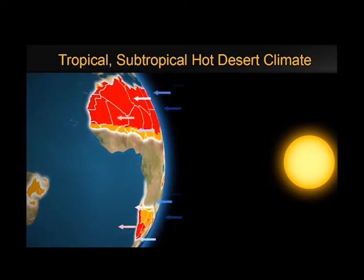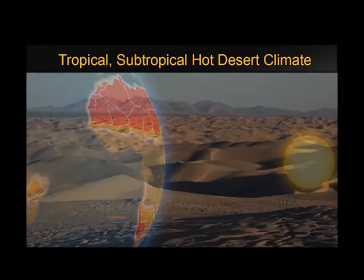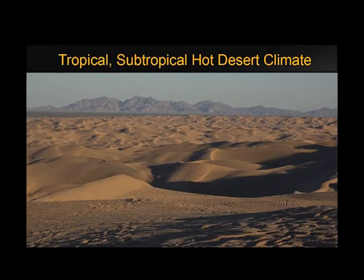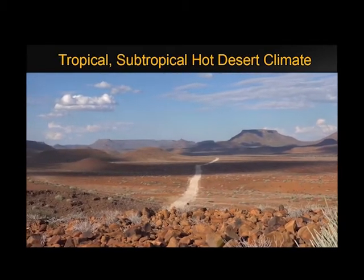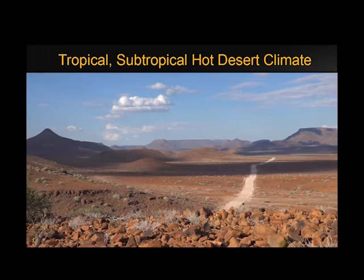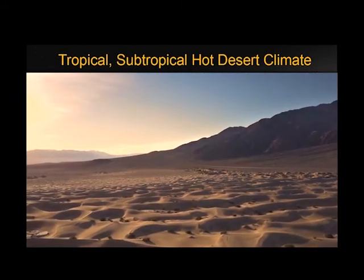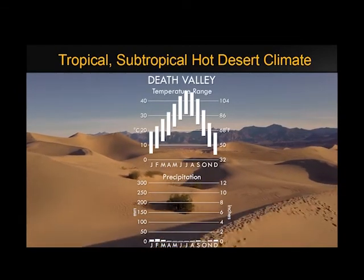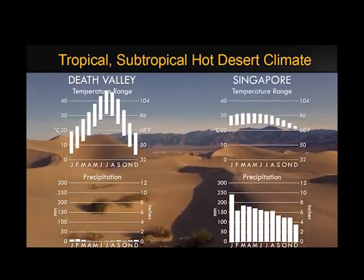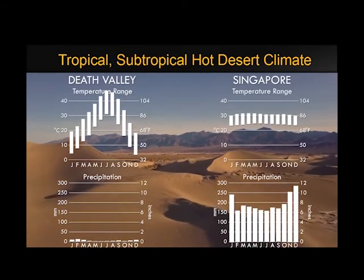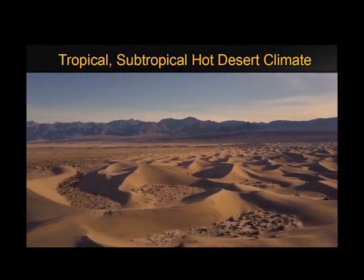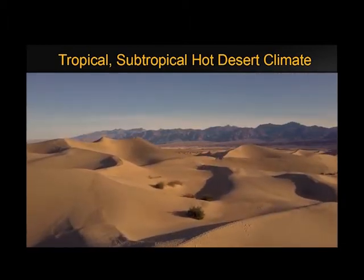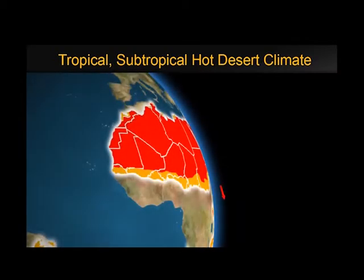Cool coastal deserts are found along the coast where cold water is upwelling. In terms of temperature, the tropical desert has the highest mean annual temperature of any climate on Earth. The high temperatures result from a high sun angle year-round and the highest percentage of sunshine of any climate. No month has an average temperature below 18 degrees Celsius (64°F), and many places have consecutive average monthly temperatures in the mid-30s Celsius (90°F). Daytime temperatures can reach 50 degrees Celsius (120°F) at low-elevation inland deserts.